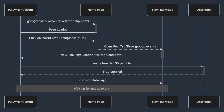This tab gets opened up using a popup event. Anytime a new tab or new window gets opened up, this popup event gets triggered. So we're going to wait for this popup event — the moment we click on World Test Championship, we're waiting for that popup. Once this resolves, a new tab or page has been opened. Then we wait for that page to fully load using wait for load state. Finally, we verify the new tab's page title, and after that we close the new tab.